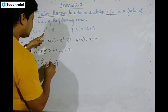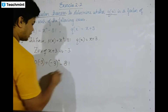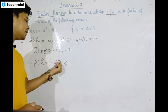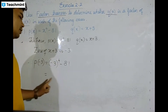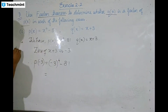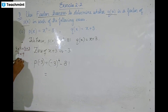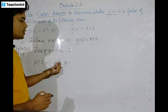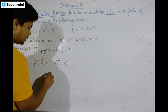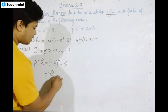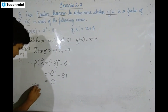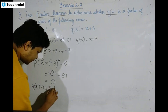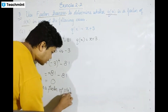Substituting x equals minus 3: P of minus 3 equals minus 3 to the power 4 minus 81. Now minus 3 to the power 4 equals 81, and 81 minus 81 equals 0. Therefore Q of x is a factor of P of x.